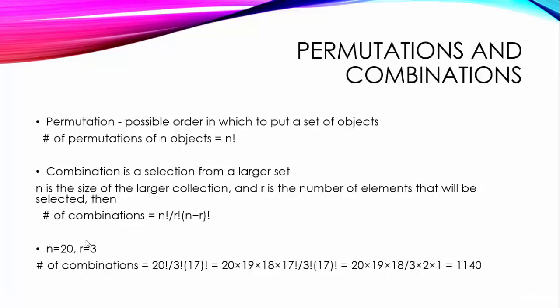Combinations. Combination is a selection from a larger set. Suppose there is a class of 20 and we are going to pick a team of 3 people at random and we want to know how many different possible 3 person teams could we pick. Another way to say that is, how many different combinations of 3 can be taken from a set of 20?